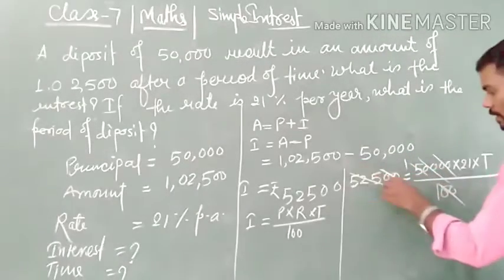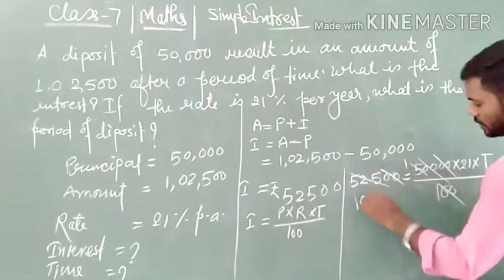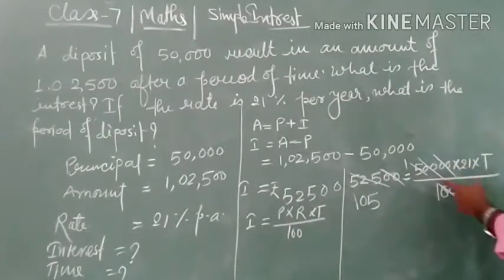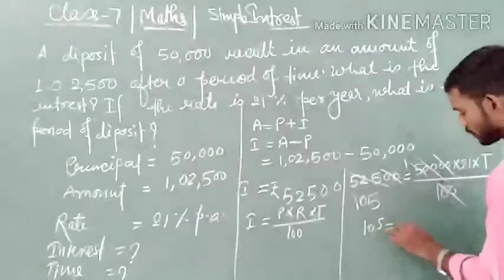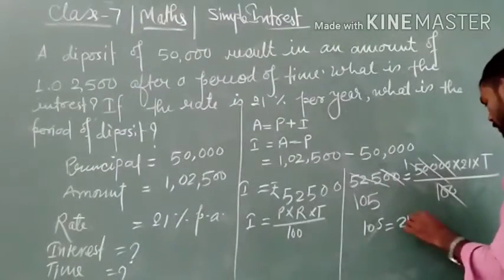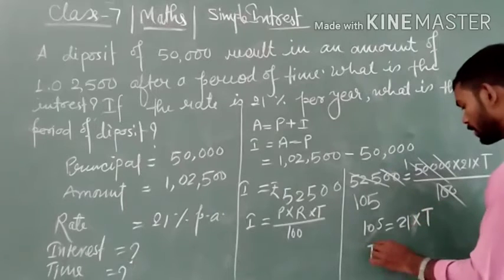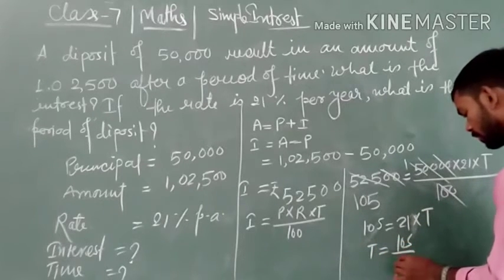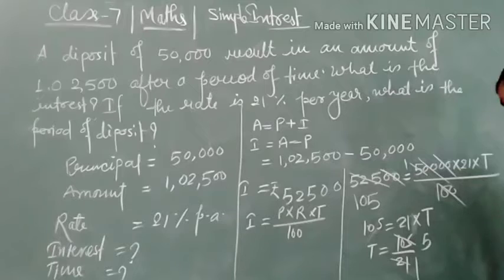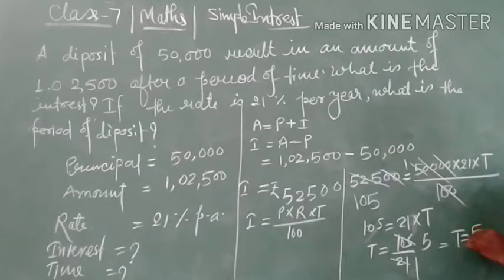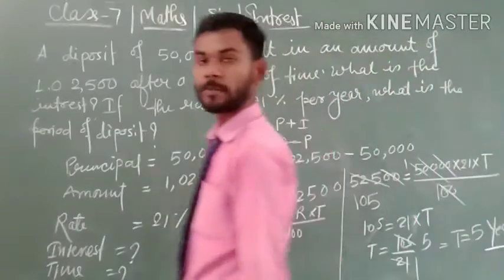After canceling the zeros and simplifying, we get 105 equals 2 multiplied by 21 multiplied by T. Solving further, T equals 5 years. So our result is T is equal to 5 years.